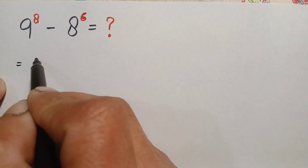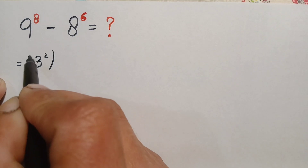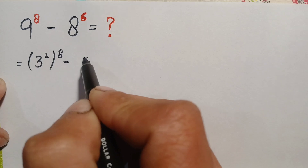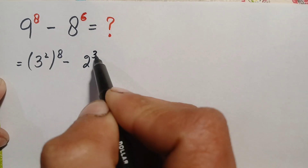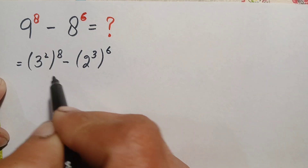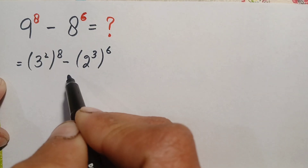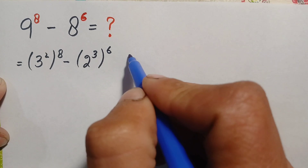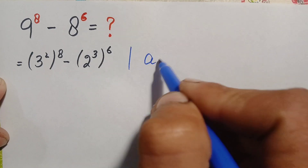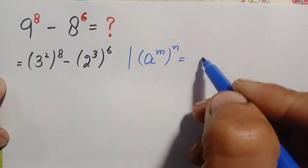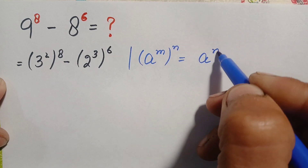9 can be written as 3 squared, or 3 raised to power 2. 8 can be written in exponential form as 2 cubed, or 2 raised to power 3. Now for these two terms, we will use an exponential identity and multiply the powers with each other. The identity is: a raised to power m, raised to power n, can also be written as a raised to power m times n.